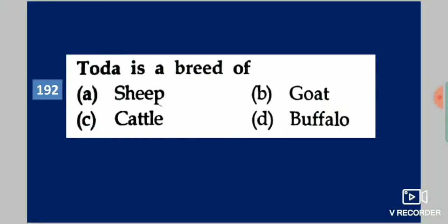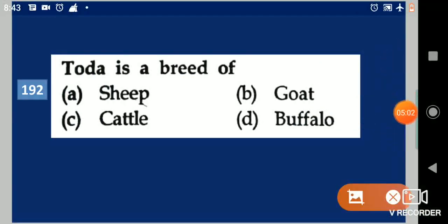Next question: Toda is a breed of dash. Your options are: sheep, goat, cattle, buffalo. Your answer is buffalo.